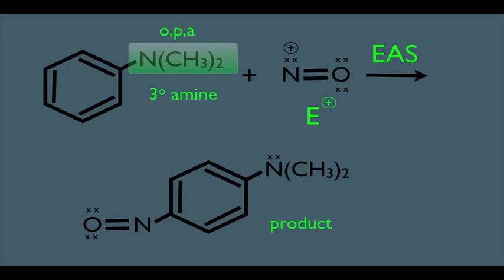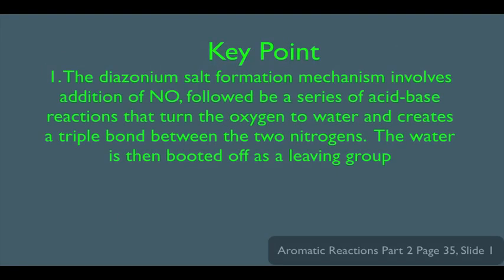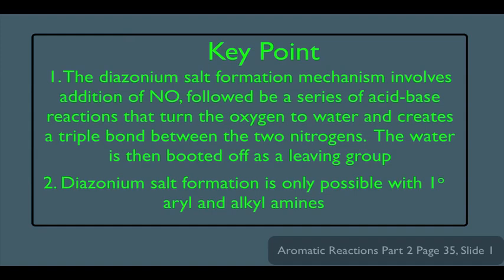What have we learned here? Key points. Number one: the diazonium salt formation mechanism involves addition of NO followed by a series of acid-base reactions that turn the oxygen into water and creates a triple bond between two nitrogens. The water is then booted off as a leaving group. Number two: diazonium salt formation is only possible with primary aryl, primary amines that are on benzene rings, and primary alkyl amines.